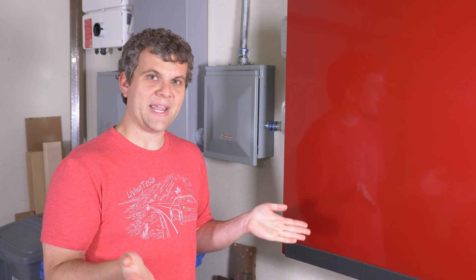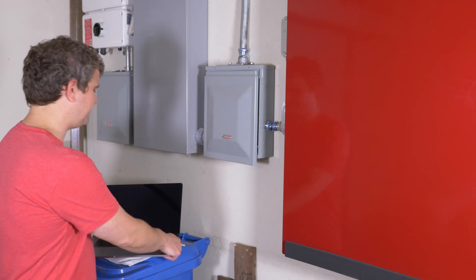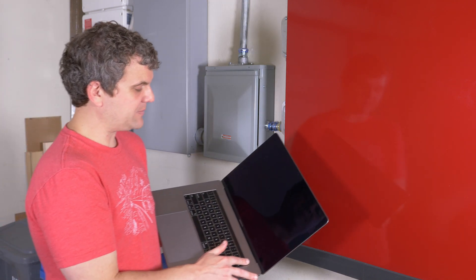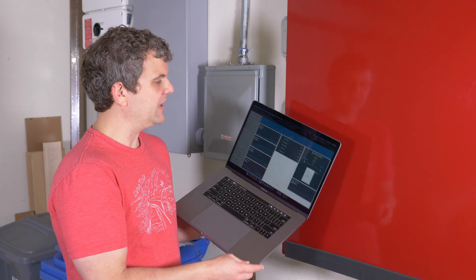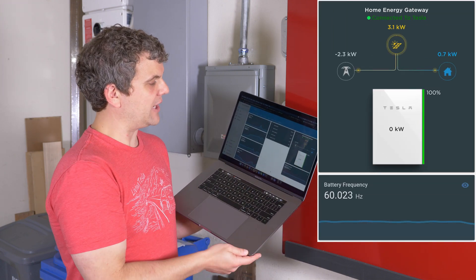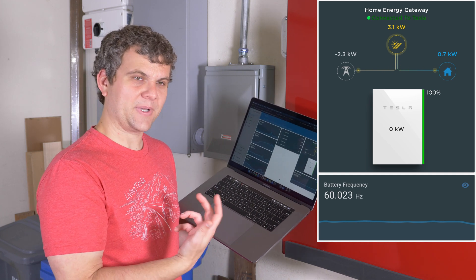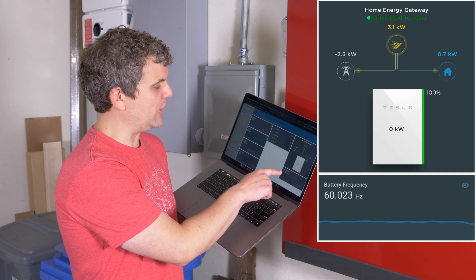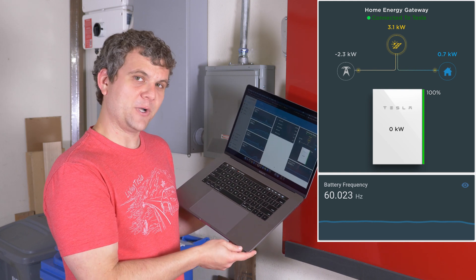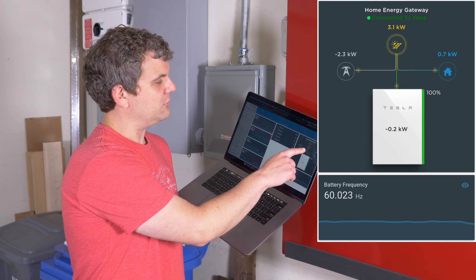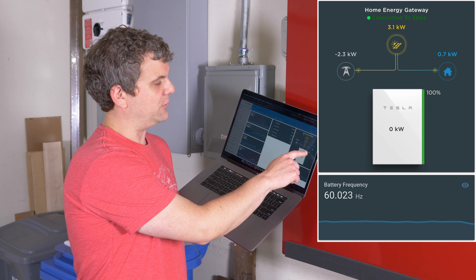So, back again, similar situation. I have my laptop with Home Assistant software running on it with a display pulled up of basically what you would see from the Powerwall app. And we also have our battery frequency down here. So right now, battery is fully charged.